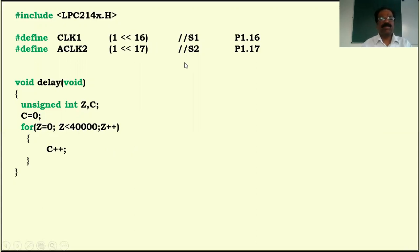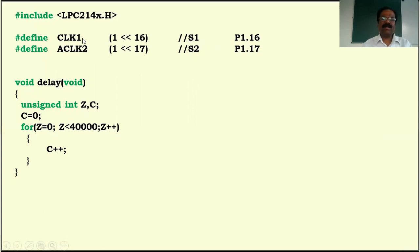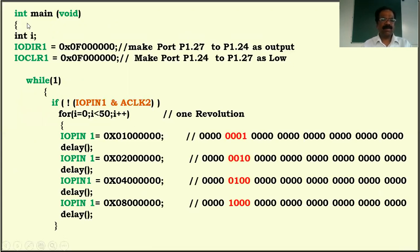I'm going to use switch one and switch two to control motor direction. CLK stands for clockwise using switch one (S1), and ACW stands for anti-clockwise using switch two (S2). Switch one and switch two are connected at P1.16 and P1.17. We have to configure these two pins as input because we are getting information from the switch. I'm going to use this as masking data — bit number 16 is one and bit number 17 is one.